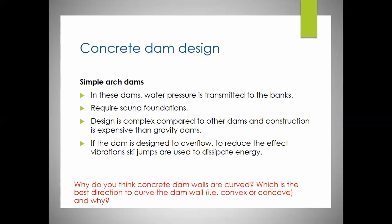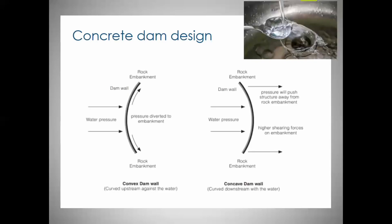Why are concrete dam walls curved - convex or concave? Think of it like a spoon: if the spoon curves one way you feel pressure downwards, the other way not so much. That's exactly how a convex dam wall works - if the dam wall is built convex toward the water, the water pressure pushes it into the rock embankment. If it were the other way, the water would push it out of the embankment, creating much more shear force. That's why a dam wall is built with that curvature facing the water.